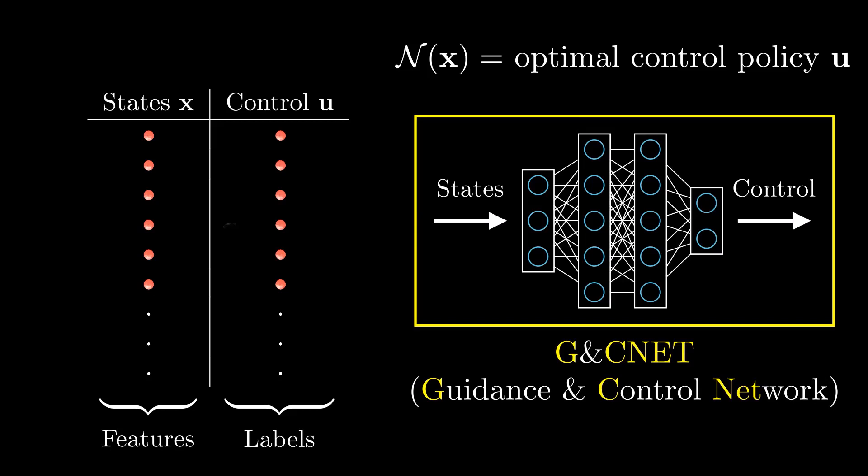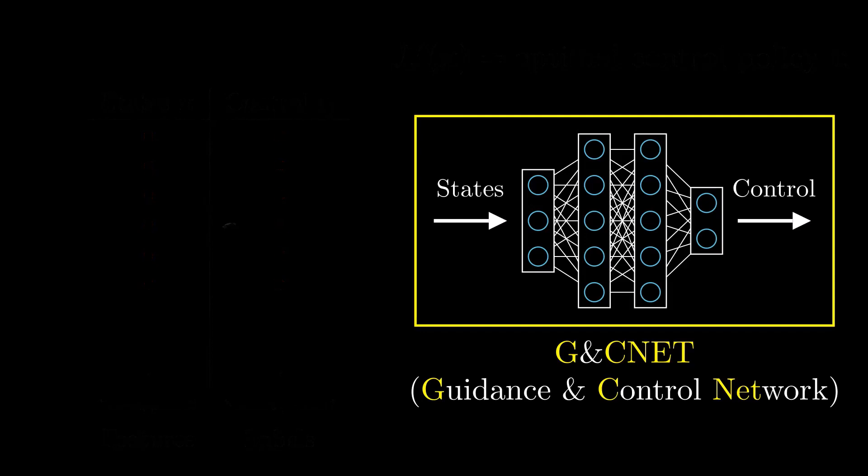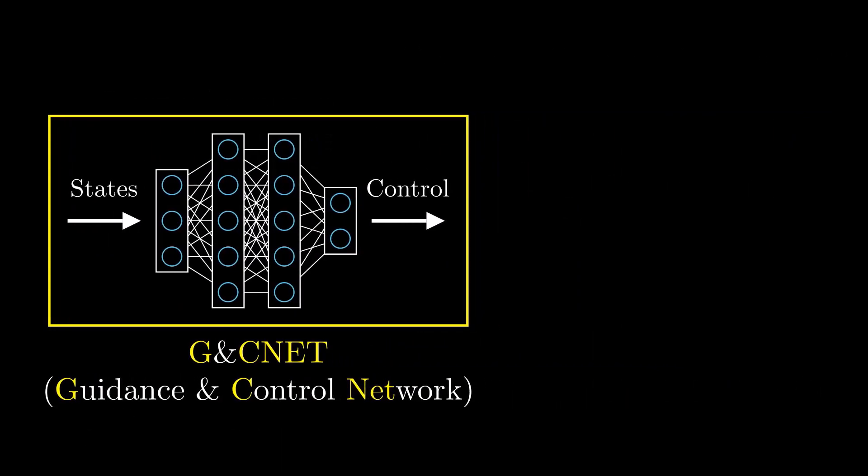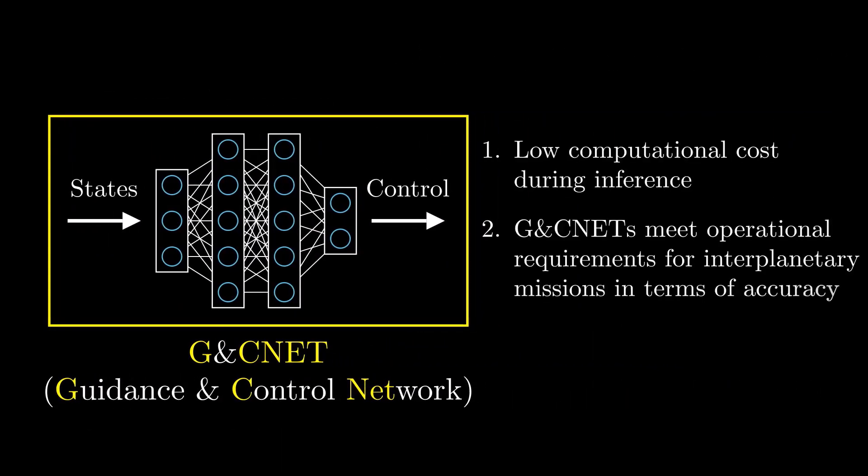Compared to classical approaches, for example traditional non-linear model predictive control, the trajectory generation and trajectory tracking steps both happen simultaneously. The use of G&CNet presents multiple advantages. It offers an autonomous guidance and control solution that requires low computational cost during inference while still meeting operational requirements for interplanetary missions in terms of accuracy.